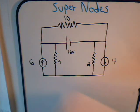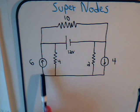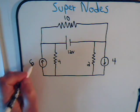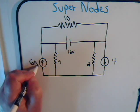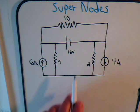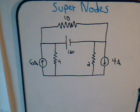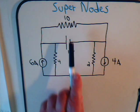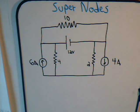In this video we want to consider a circuit where we have a current source of 6 amps and another one of 4 amps, a voltage source of 12 volts, and three resistors of 2, 4, and 10 ohms.